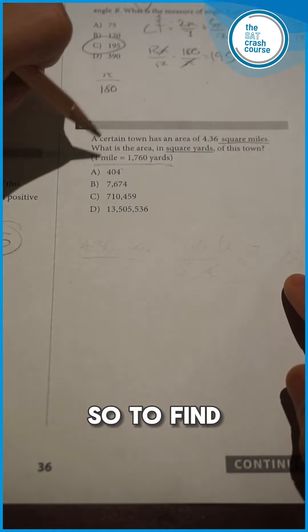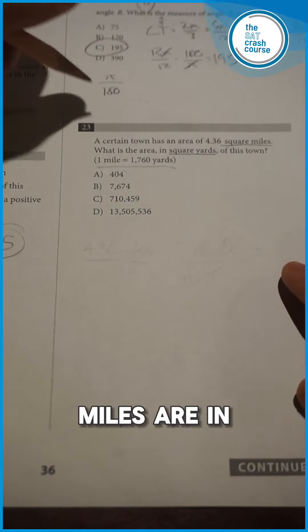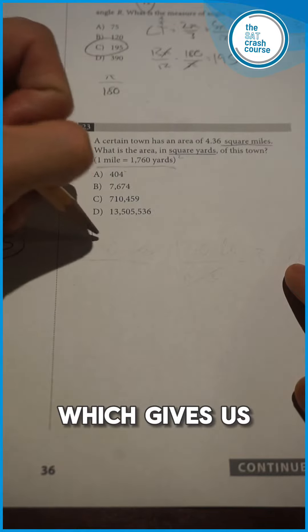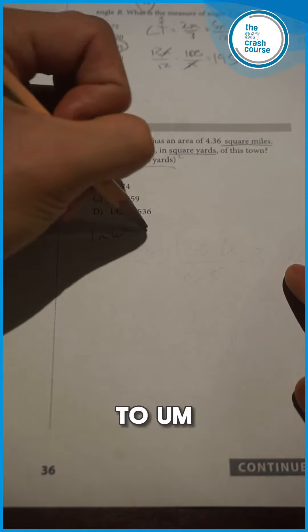So to find out how many yards squared are in one square mile, we simply have to square both sides of this equation, which gives us one mile squared is equal to...